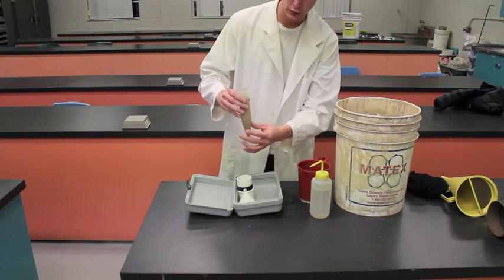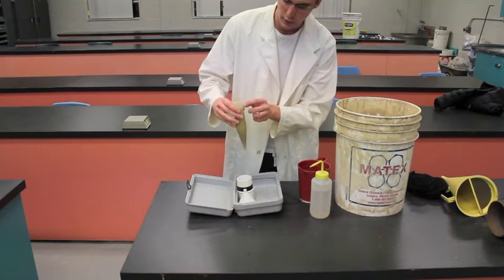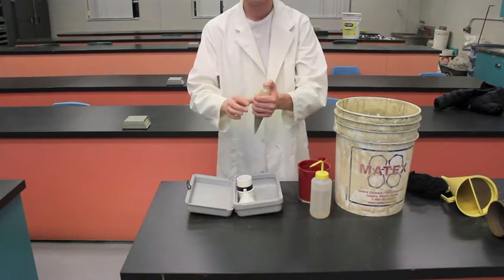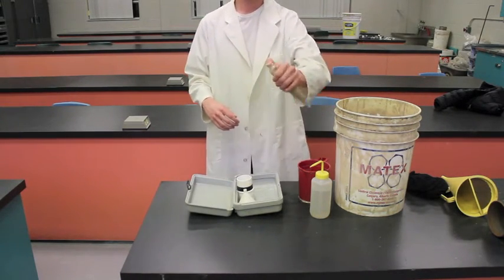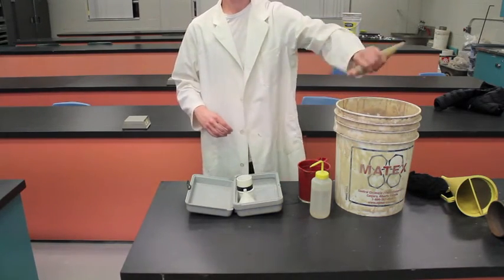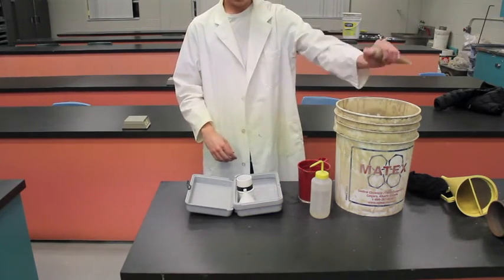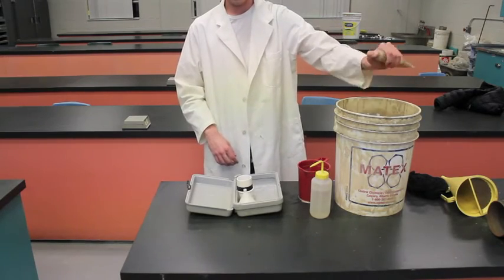And there you have it, so our tube is filled, we have our mud here and our water there and now what you're going to do is you're going to invert the tube and you're going to shake it and this will allow everything to get mixed up and blend with the water and then we'll put it over top of our screen.